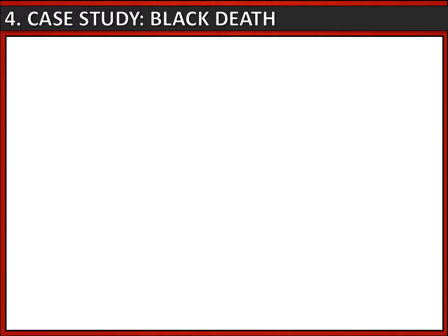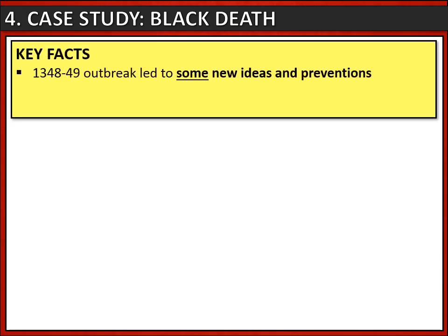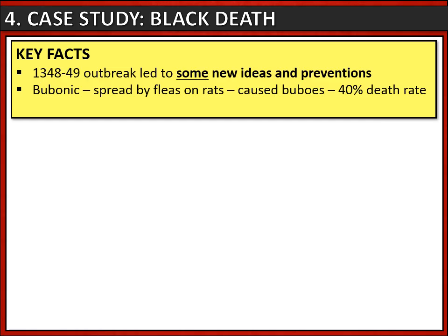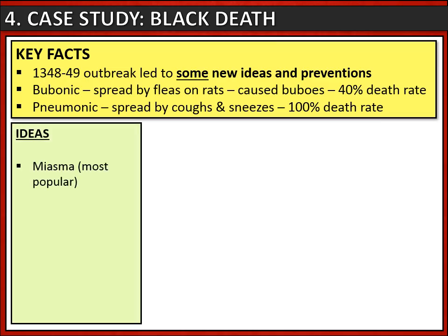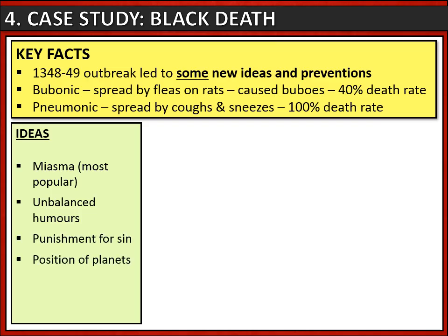Now let's look at the case study: the Black Death. You need to know about the 1348 outbreak because it led to some new ideas and preventions. There were two versions: the bubonic version, spread by fleas on rats, caused buboes or swellings on the patient's body and killed about 40% of those who got it. The pneumonic version was spread by coughs and sneezes and was far deadlier — it killed 100% of people who caught it. In terms of cause, the main idea was miasma or bad smell. People also thought it might be caused by unbalanced humours, God's punishment for sin, or the position of the planets. There were some new ideas too: they linked it to volcanic eruptions, and some people realised the disease was spread by contact with the sick.